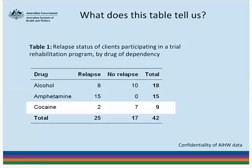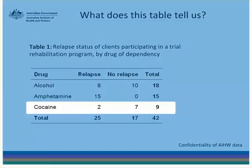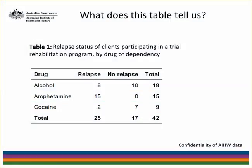Now look at the row relating to cocaine users and, in particular, the small value in the relapse column. To identify that a person falls into this cell, you have to first know that they took part in the trial program, secondly know that they are a cocaine user, and thirdly know that they suffered a relapse. Once you've used this information to locate the person in this cell, there is no additional information in the table for you to learn. Under the attribute disclosure definition adopted by the Institute, this cell does not pose a disclosure risk and can be safely released.